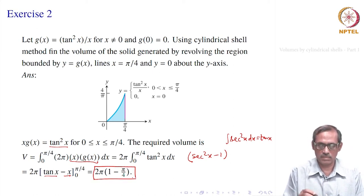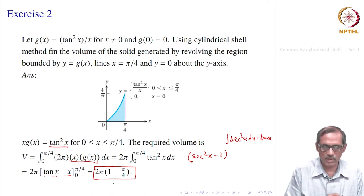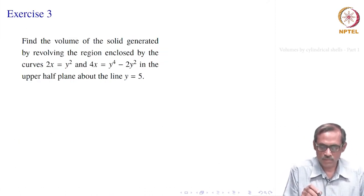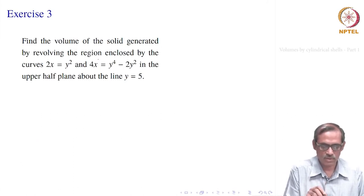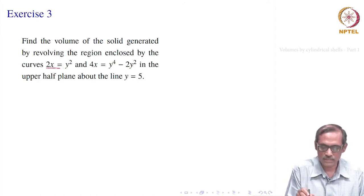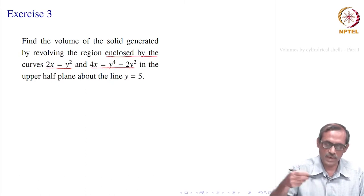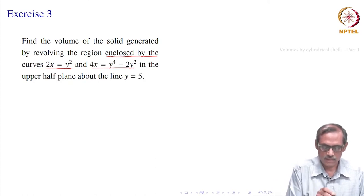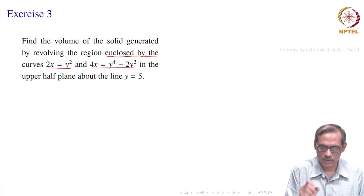As you see, it is not very difficult to apply. Now let us solve another problem: find the volume of the solid generated by revolving the region enclosed by the curves 2x = y² and 4x = y⁴ − 2y² in the upper half plane, revolved about the line y = 5.